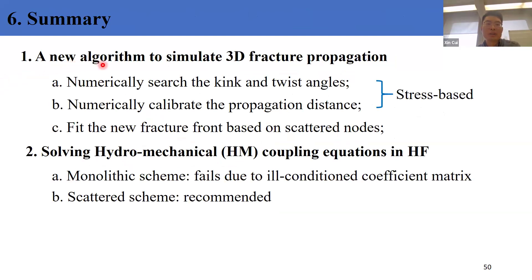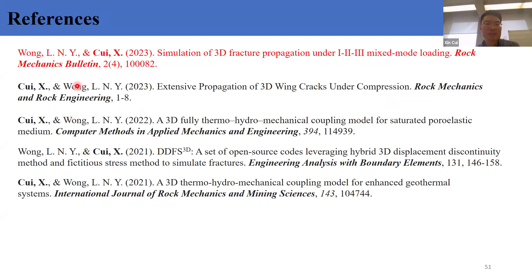In summary, this study provides a new algorithm to simulate 3D fracture propagation. We numerically search for kink and twist angles and calibrate the propagation distance — both steps based on stresses instead of SIFs — and fit new fracture fronts based on scattered nodes. On the second topic, the HM coupling in the context of hydraulic fracturing: the monolithic scheme fails because the Jacobi matrix is ill-conditioned, and the staggered scheme is recommended. References related to today's talk are provided, with most of the contents included in the associated paper.